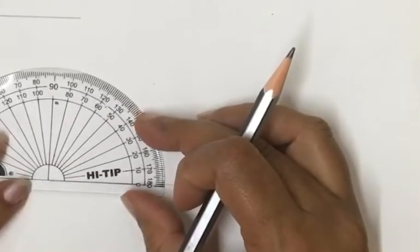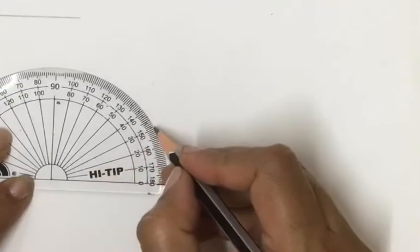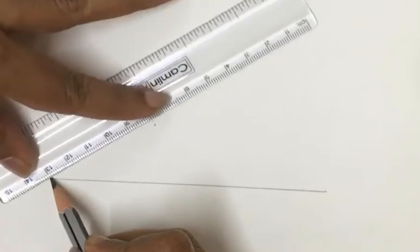All of this is small, small, small. Government will give you all papers, don't you worry. 30. So we have made an angle of 30 degrees.